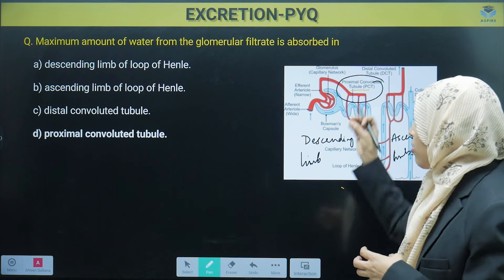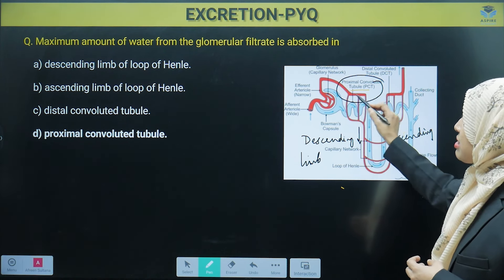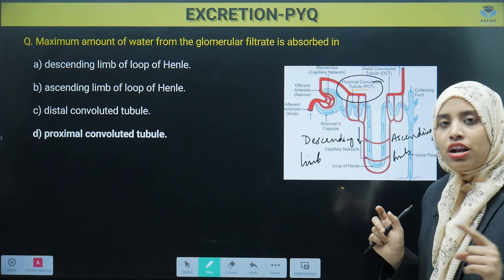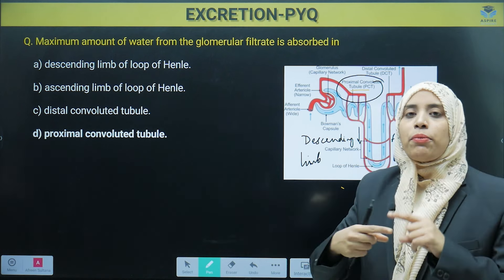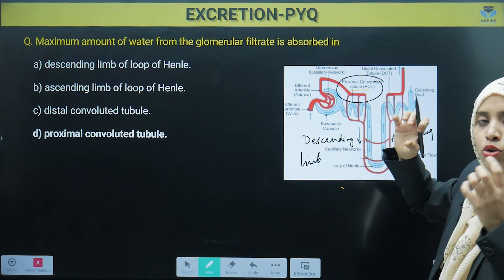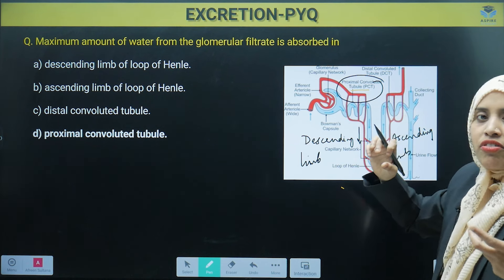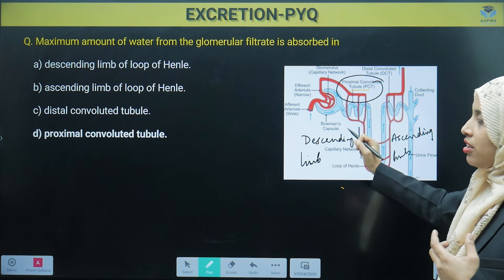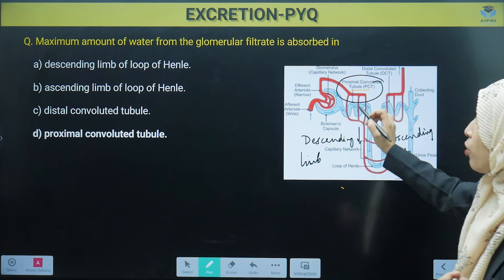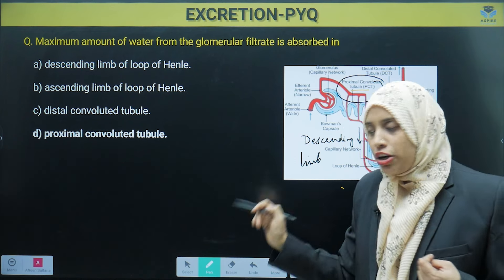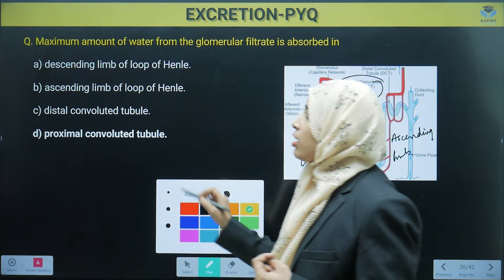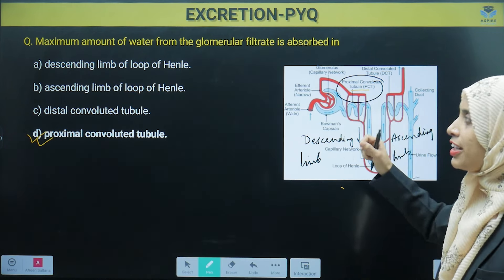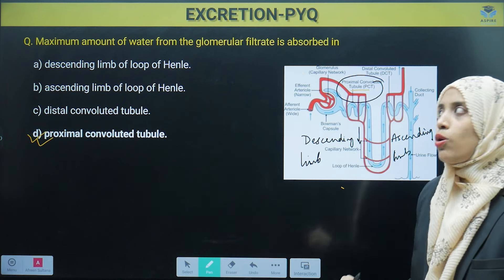All the useful water is returned to the blood capillaries. As you can see, the red ones are the blood capillaries — our nephron is wrapped by blood capillaries. All useful water that is not waste is reabsorbed by the capillaries. Maximum reabsorption happens in the proximal convoluted tubule. So directly we can mark option number D, because maximum reabsorption happens at the PCT.